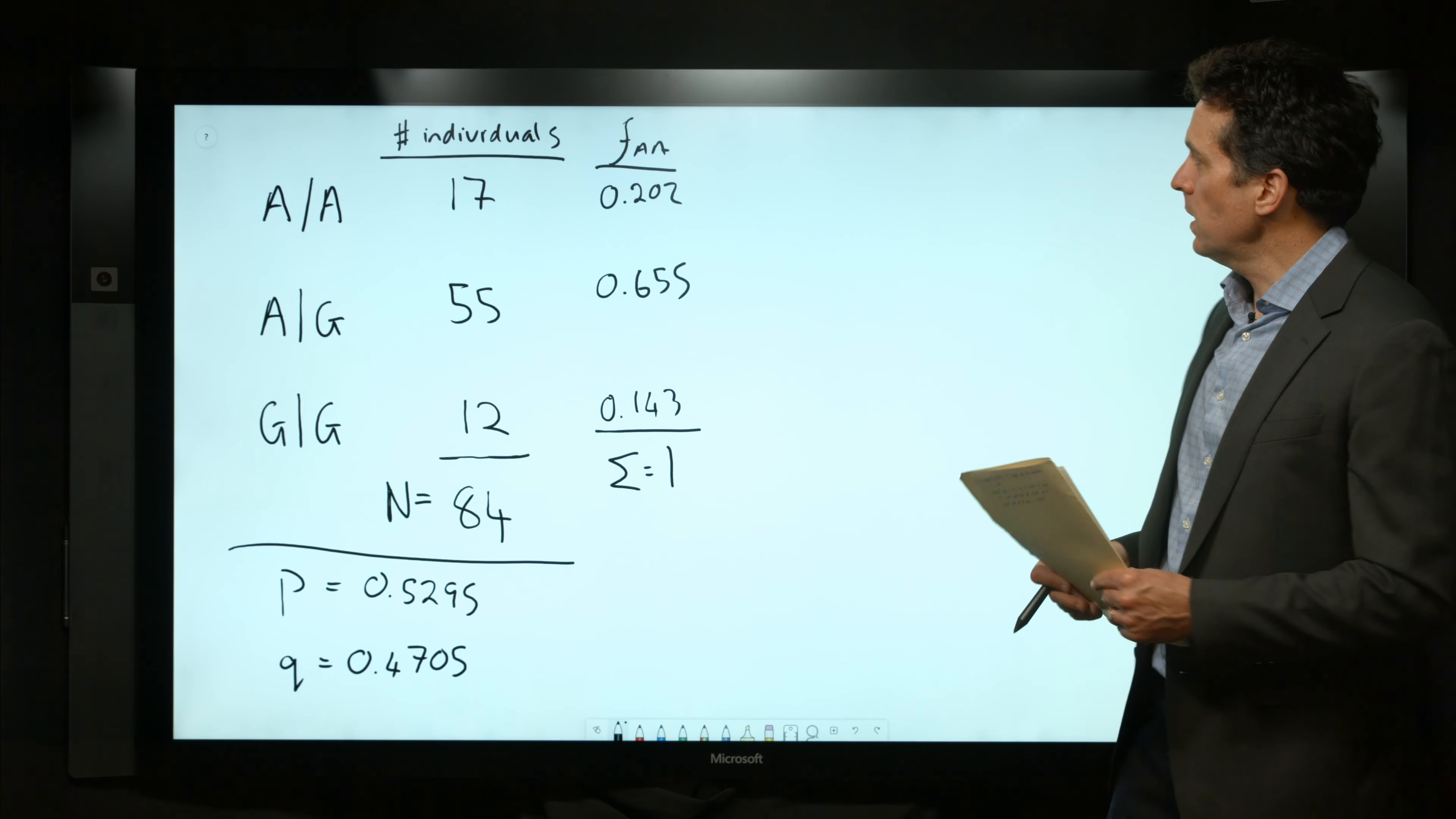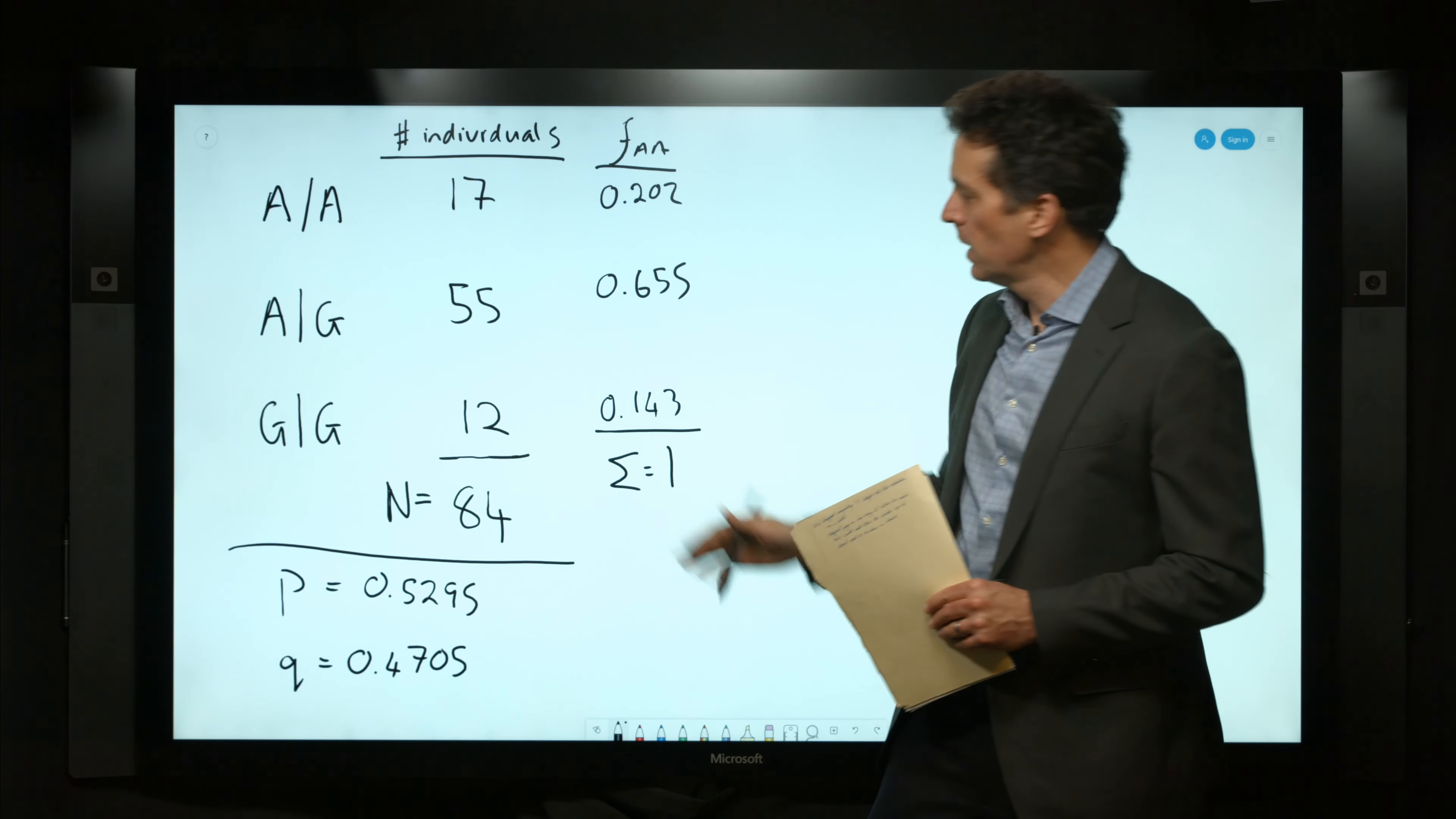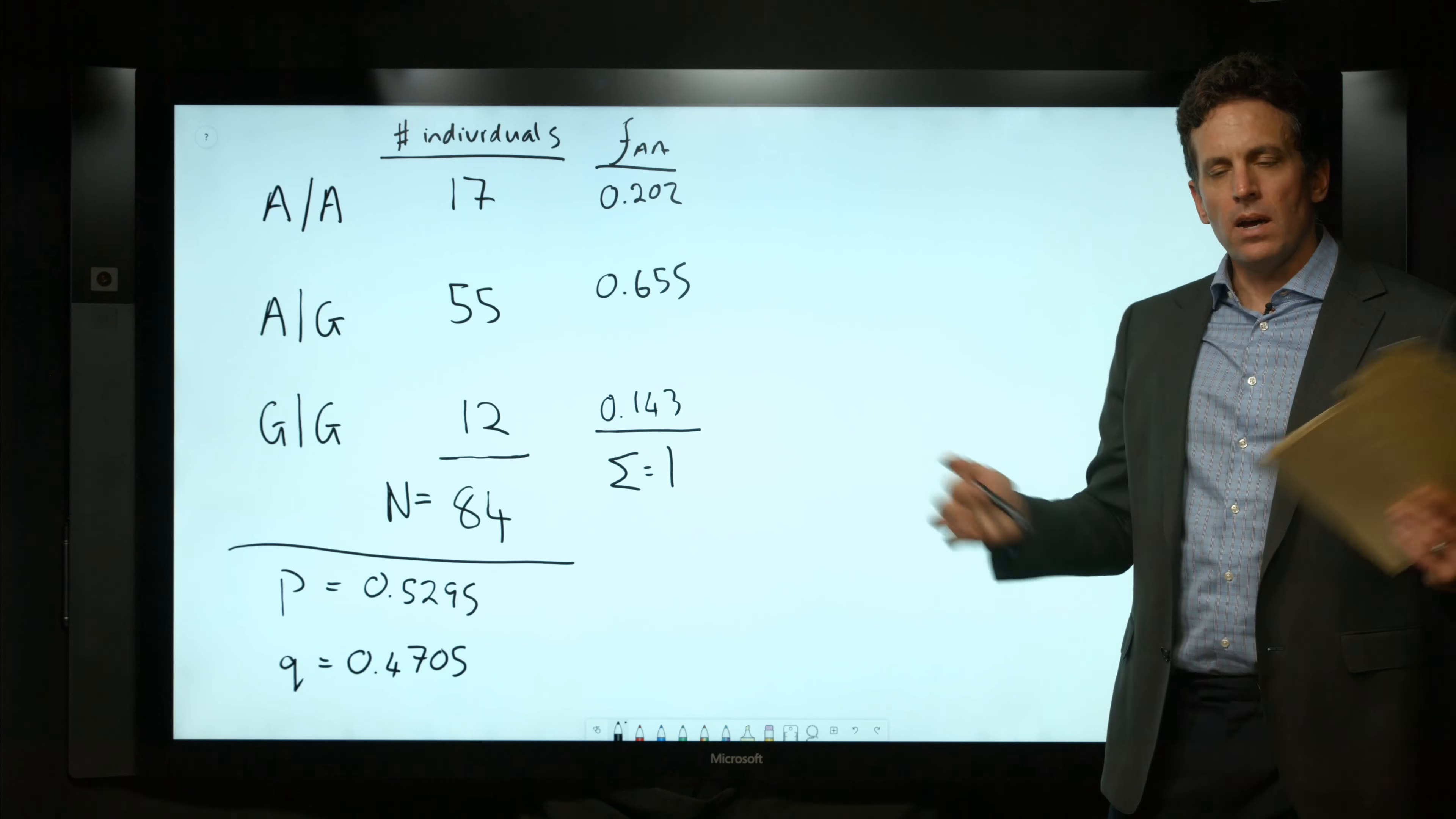What we've done here is taken the genotype, the number of individuals with each genotype, computed the frequency of each of those genotypes, and used that information to compute P and Q—the allele frequency of A and the allele frequency of G in this case. Those are the frequencies that we observe in the population.